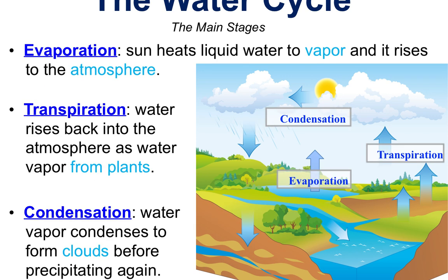Evaporation is when liquid water turns from a liquid to a vapor. As it's being warmed and increasing in energy, it rises to the atmosphere where it collects. Condensation is when water vapor becomes very close together — usually due to cooling temperatures — and forms clouds. Having that water condensed up in the atmosphere forming clouds is condensation, and this happens before precipitation, before it rains. Transpiration is when water also comes back up into the atmosphere through plants — they have pores underneath their leaves that release water vapor when their temperature starts to rise in the morning.